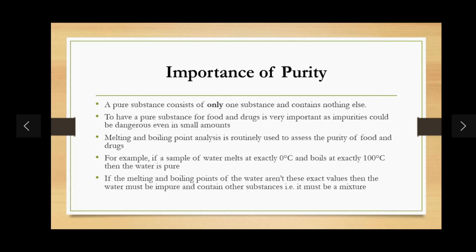If the impurity is another liquid rather than a dissolved solid: if it's a pure substance, the boiling point will be sharp and all the liquid will boil at a constant temperature. If it's an impure substance, it will boil over a range of temperatures, starting at the boiling point of one liquid and rising to the boiling point of the other — it is a mixture.